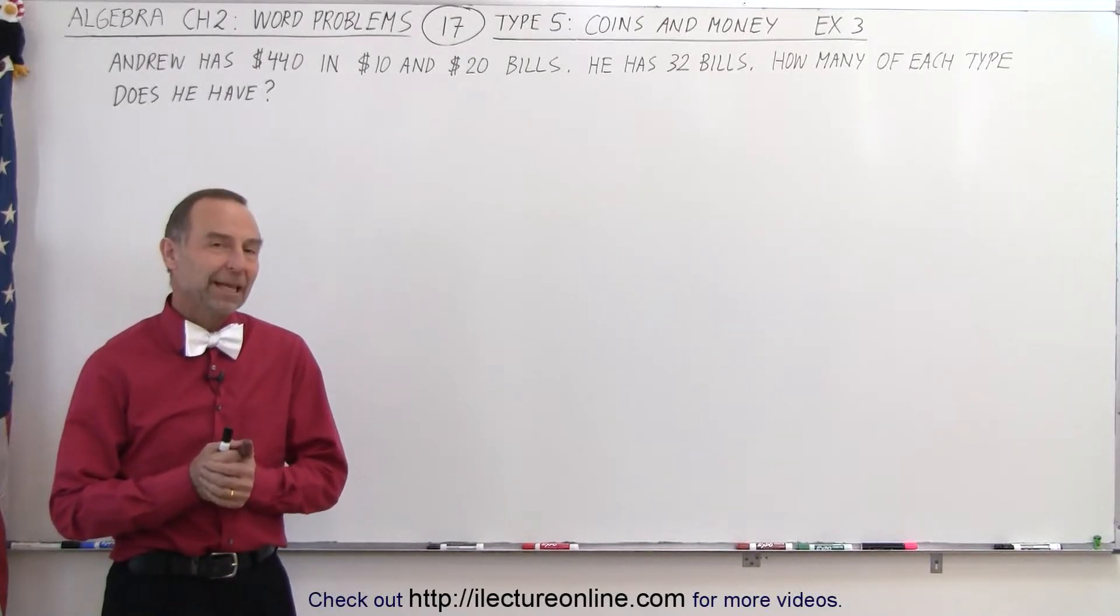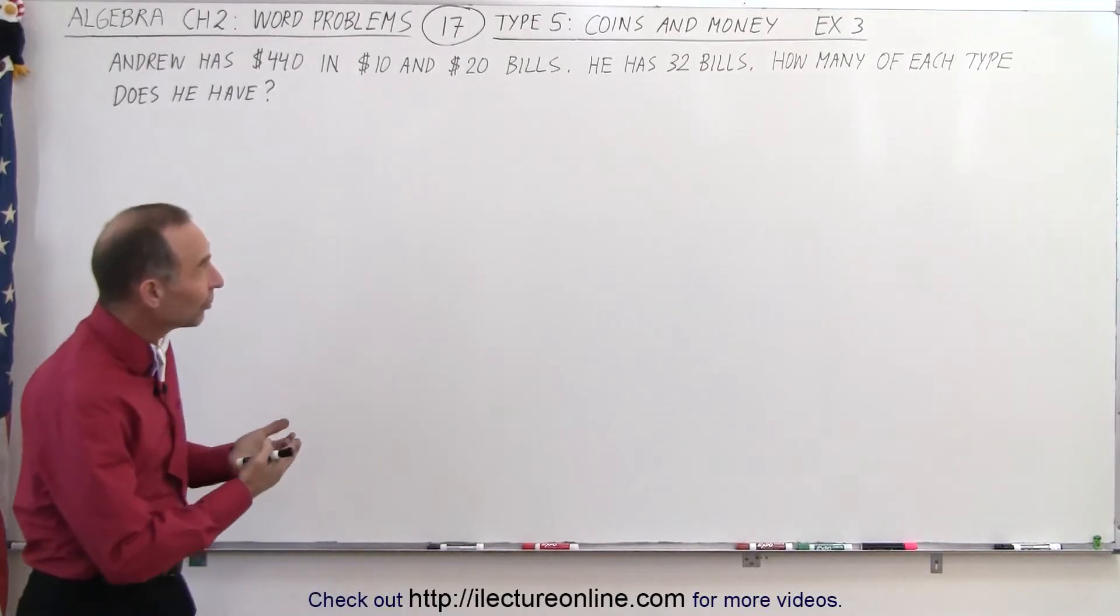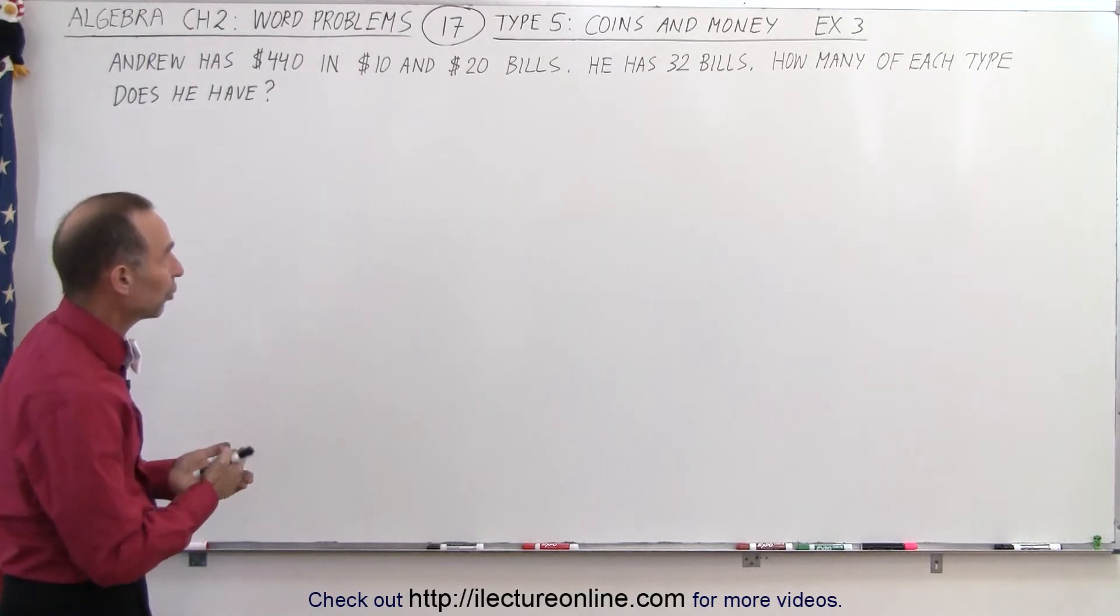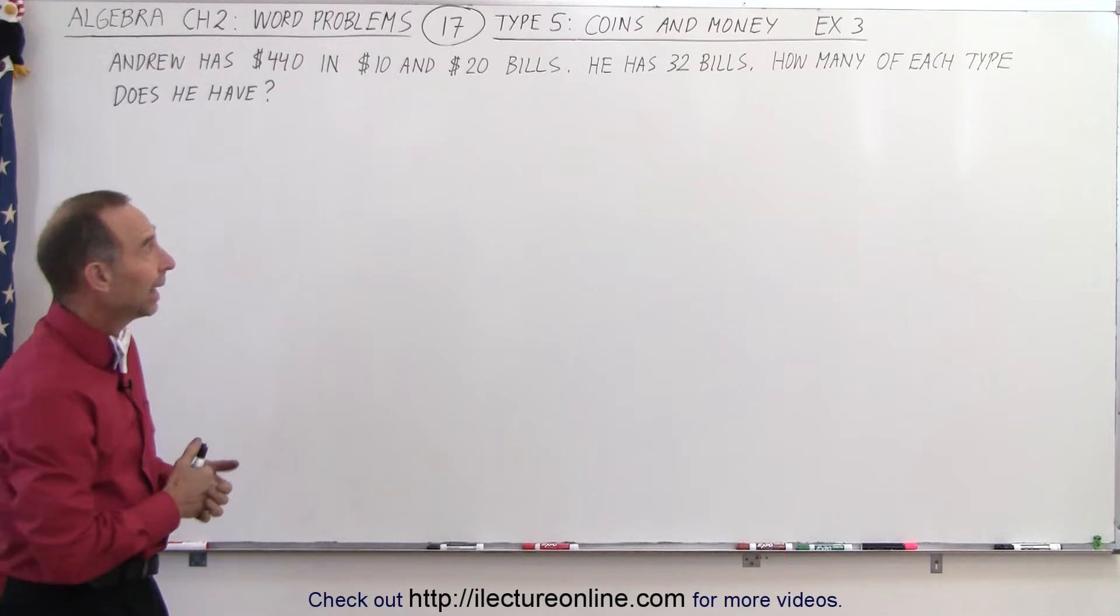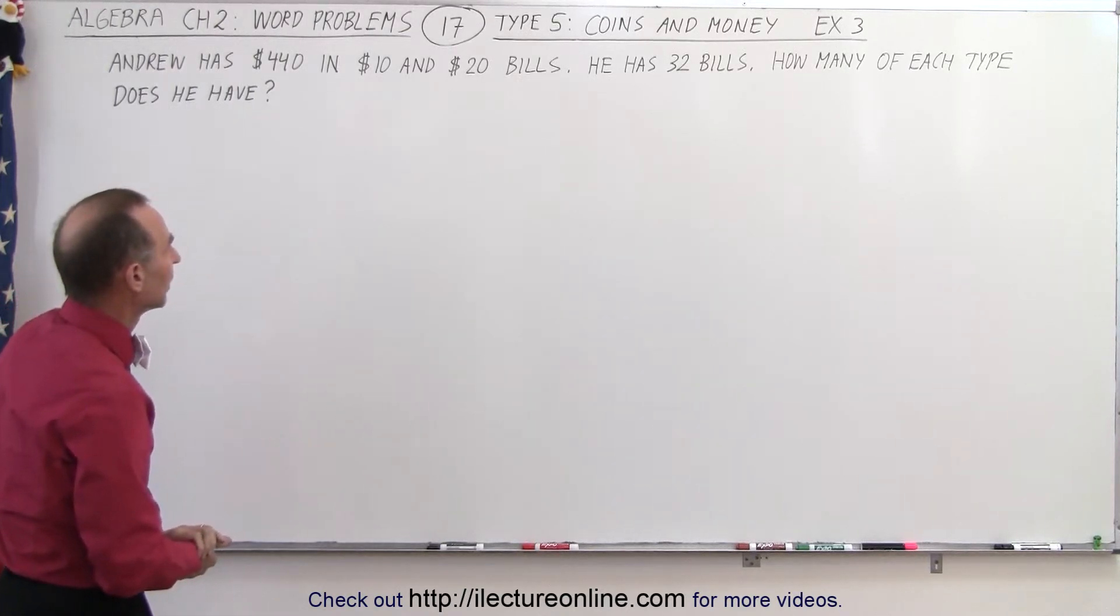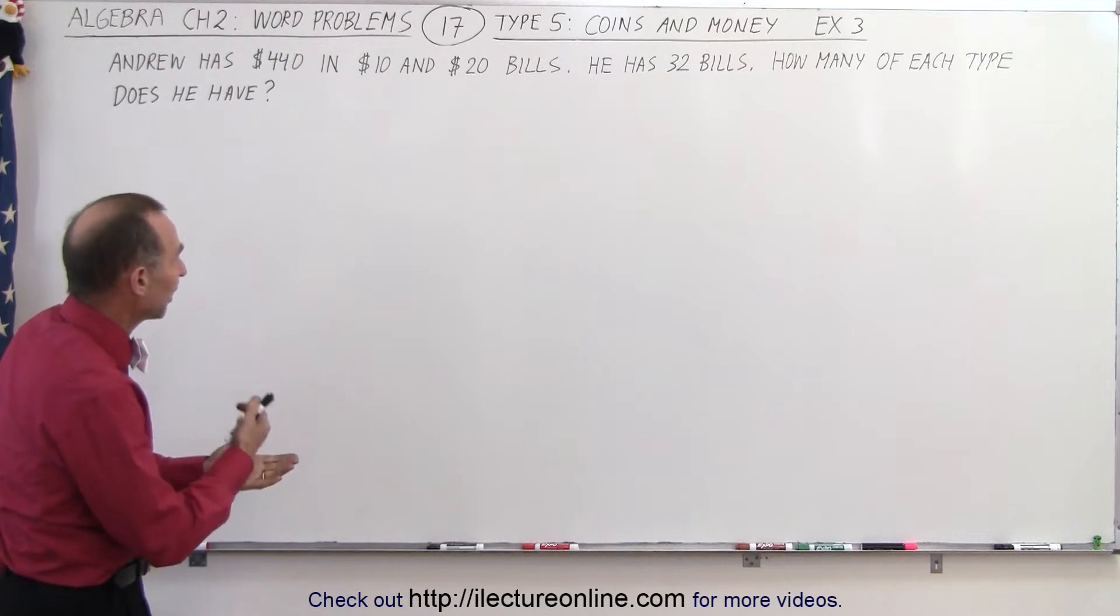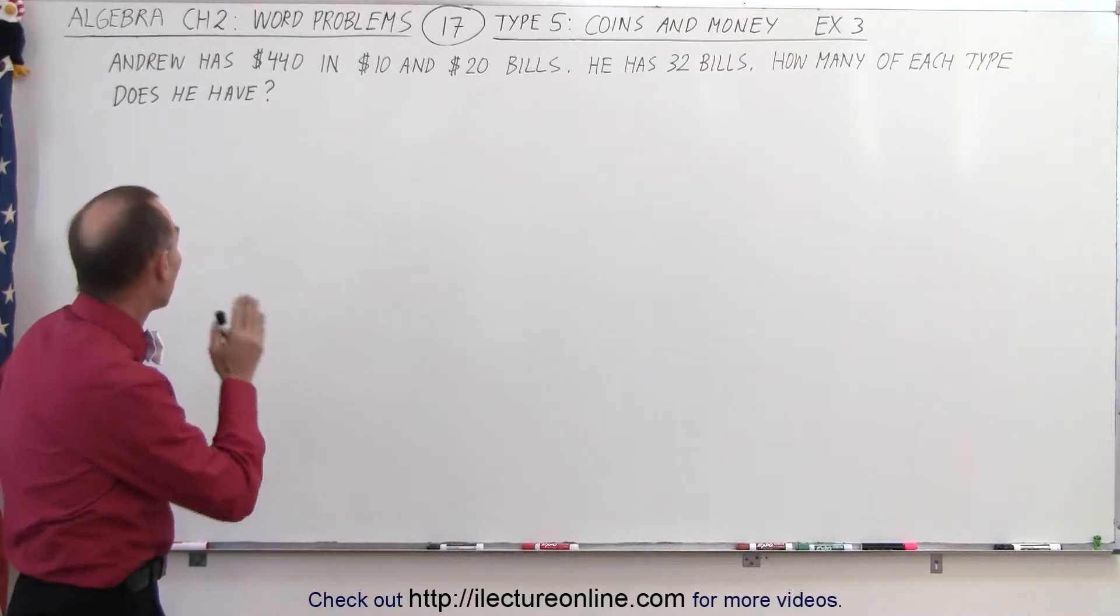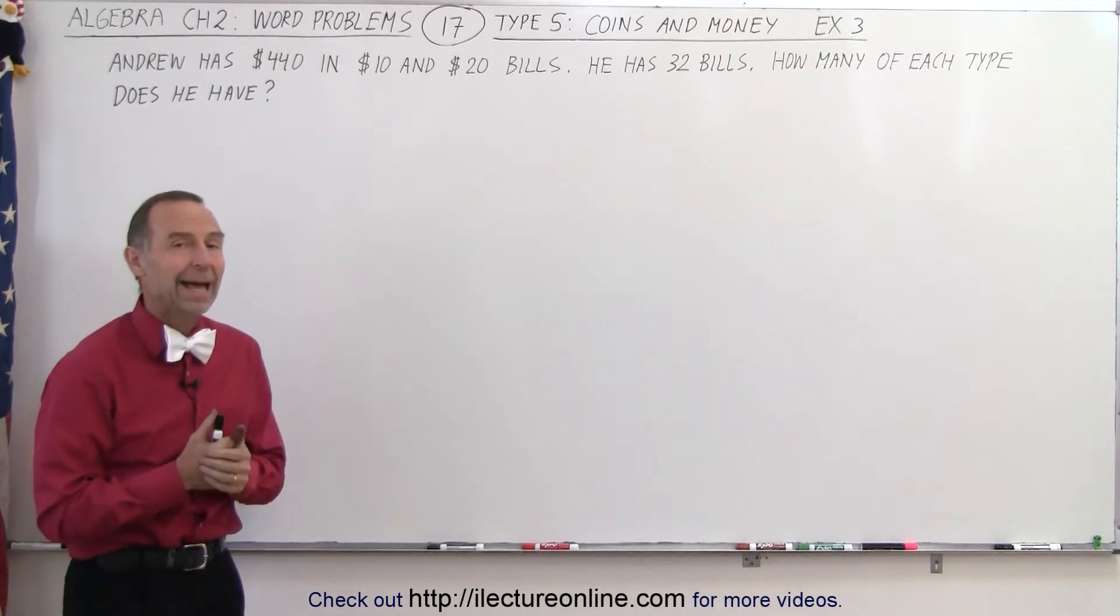Welcome to my lecture online. In this example, we have bills instead of coins. We have $10 bills and $20 bills, a total of 32, and together they have a value of $440. So if you have $440 in $10 and $20 bills and there's a total of 32 bills, how many of each type of bill do we have?